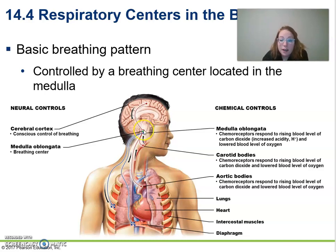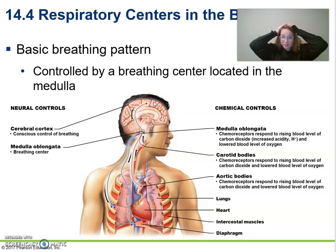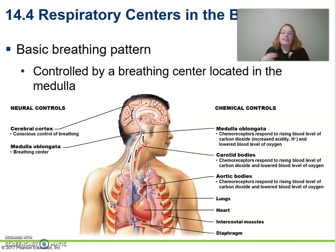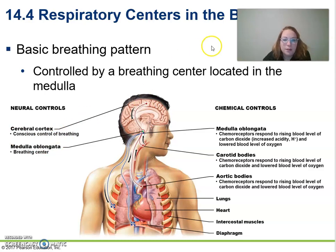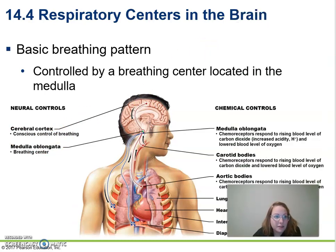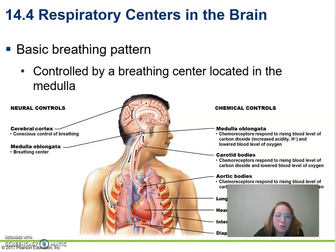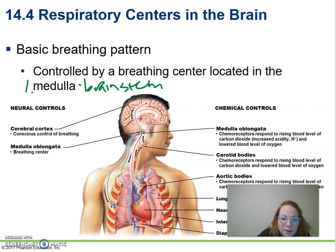The medulla's control can be overridden by higher brain centers. The cerebral cortex takes over when you consciously think about breathing, and the hypothalamus overrides it when you gasp in surprise. To summarize: the medulla brainstem handles automatic breathing, and cortical controls from the cerebral cortex provide voluntary override.